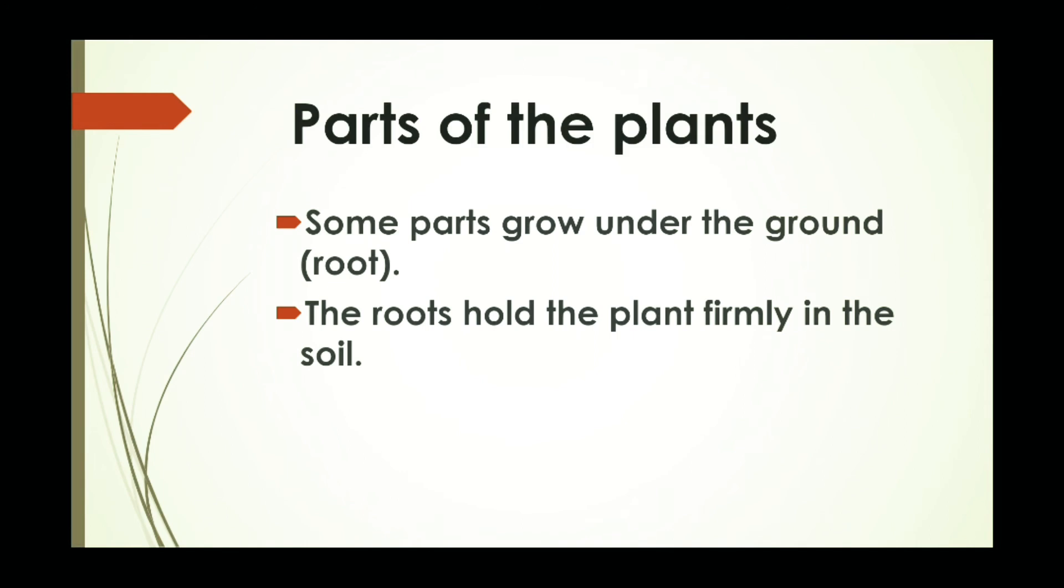Parts of the plants. Some parts grow under the ground, like root. Where does the root grow? The root grows under the ground. The roots hold the plant firmly in the soil. If there is no root, your plant will be fallen. So roots hold the plant firmly in the soil.